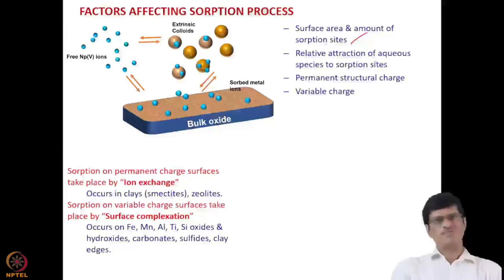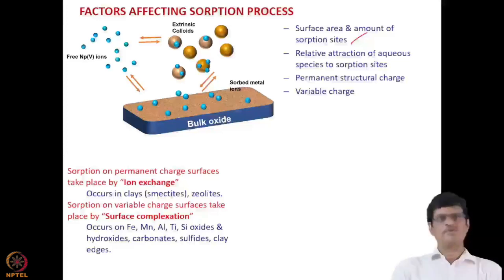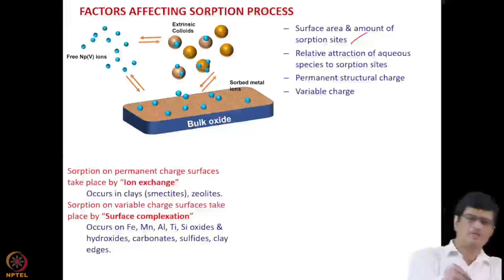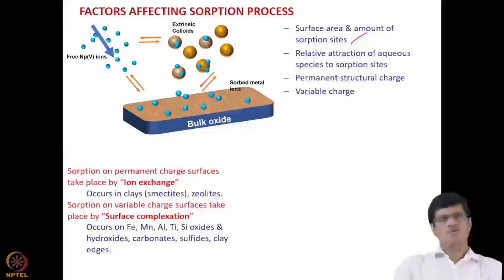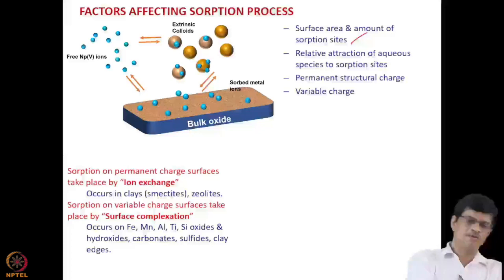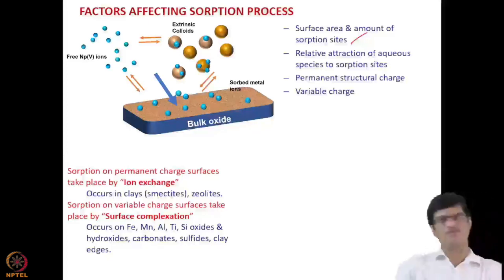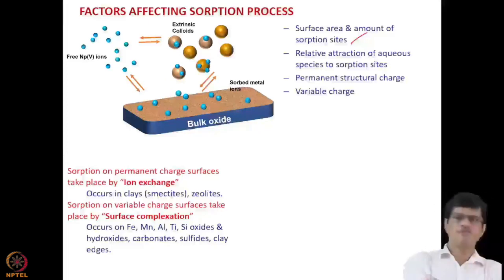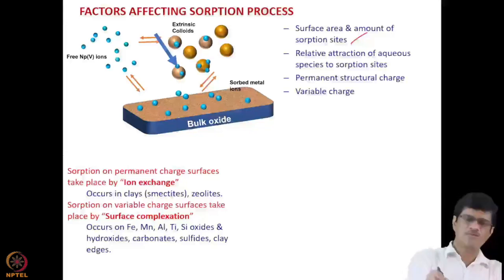The mechanism of adsorption can be two-fold. First is the ion exchange which happens in clay minerals like smectites and zeolites. In this example, neptunium ions are present — consider neptunium in the plus-five state, i.e., the neptunyl ion. Some of this neptunium will directly form a complex with the surface of the bulk mineral phase, and it can also bind with mineral colloids of larger size.